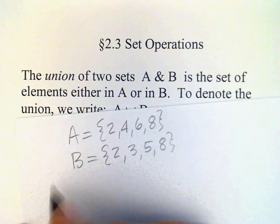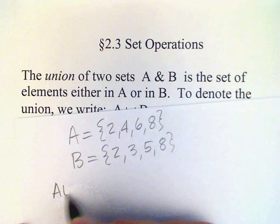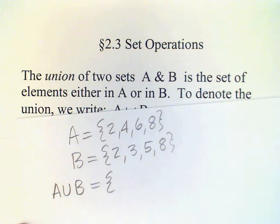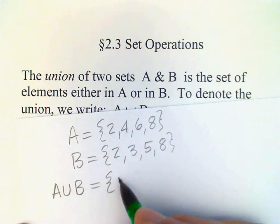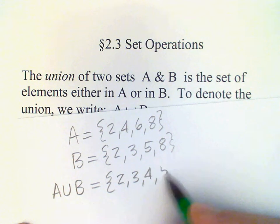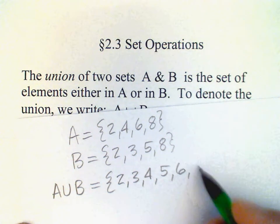To write the union of these two sets, we simply make a list of all the elements. So we have the elements that are in either the one or the other set or in both. So we have 2, 3, 4, 5, 6, 8.